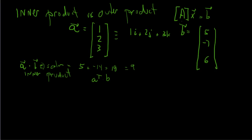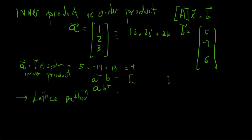But what happens if we do the outer product, which is A times B transpose? What do we get? This goes back to something introduced in good math classes, called the lattice method — basically a way to break numbers, thought of as vectors, into different pieces and multiply every piece by each other. So if we do A times B transpose, the multiplication of 1, 2, 3 by 5, minus 7, 6 — a 1-by-3 times a 3-by-1 is a 1-by-1.